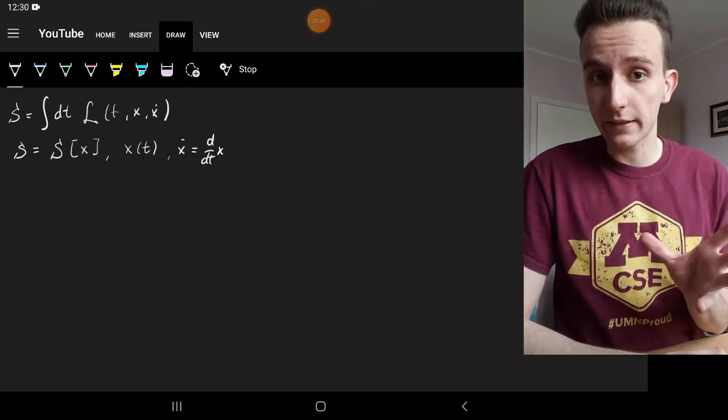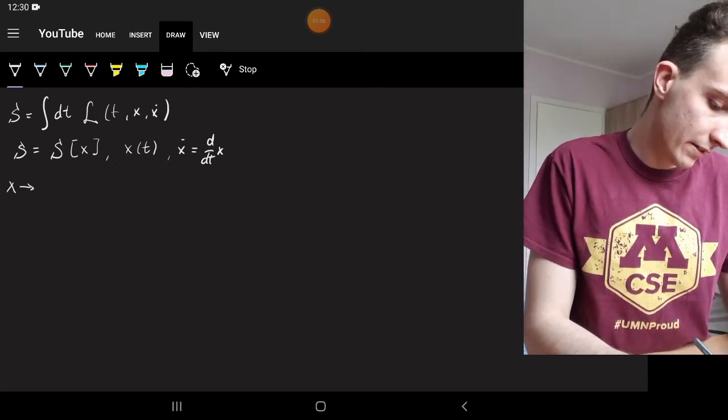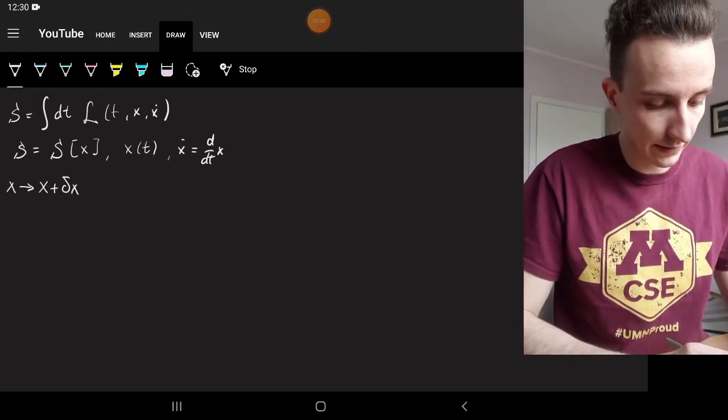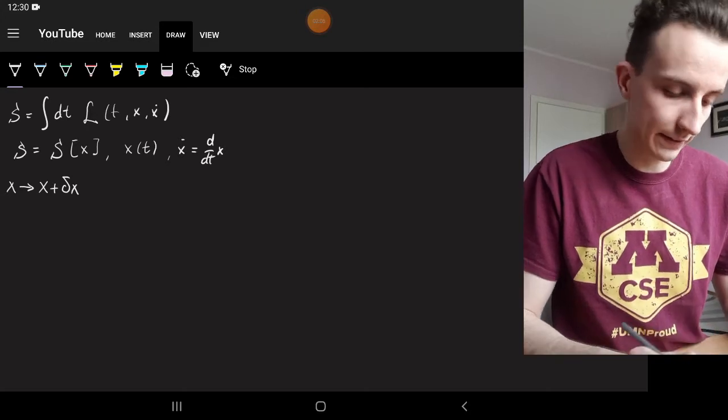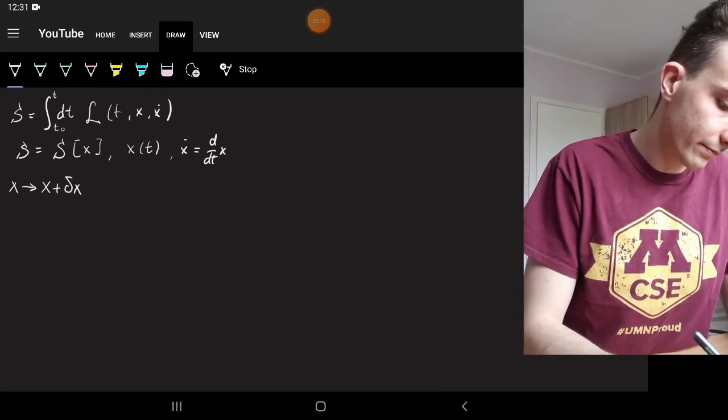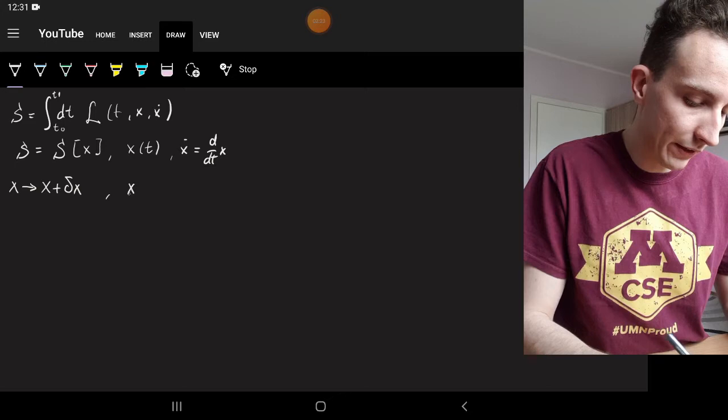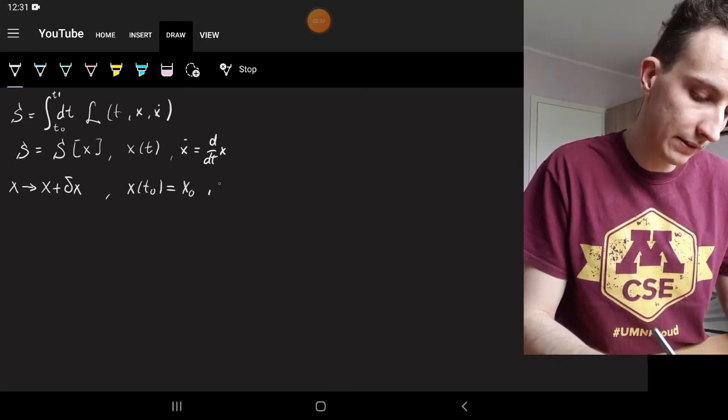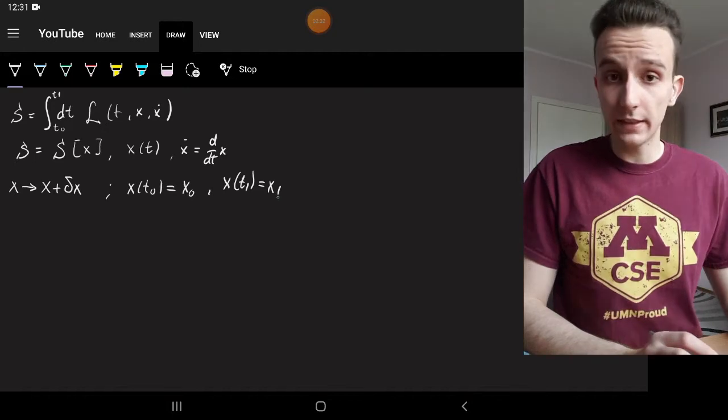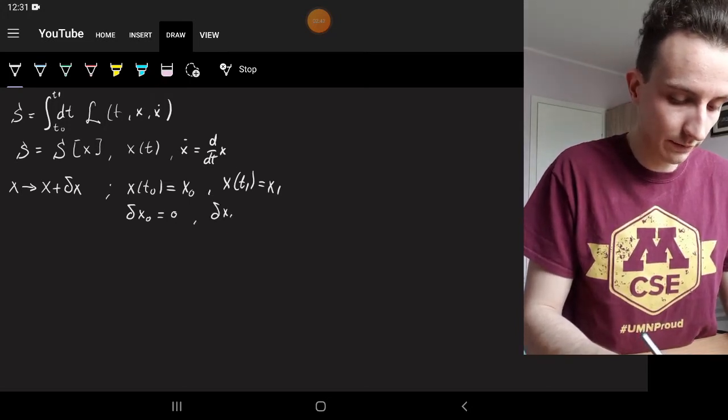So in these cases, x is going to be a different function. What we're looking for is we want to change x to go into these little variations, x plus delta x. Now it's also important to note this integral is on an interval from t0 to t1, and we say that we know x of t0 is x0, and x of t1 is x1. So this means that in these points there will be no variation. So delta x0 is 0, and delta x1 is 0.